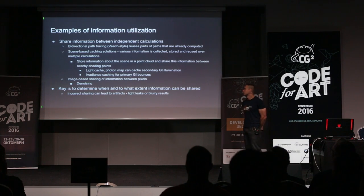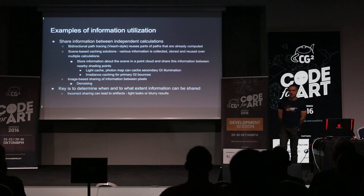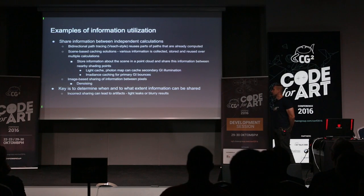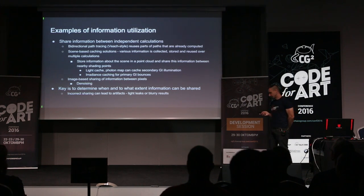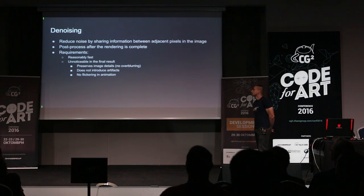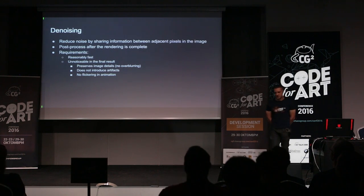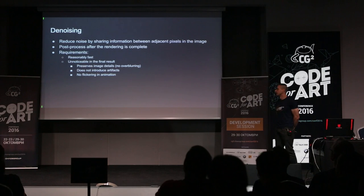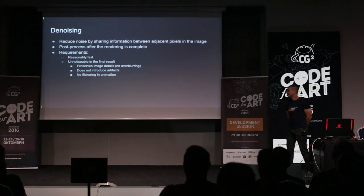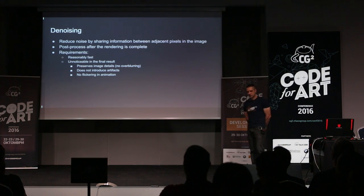The key to making a successful denoiser is to figure out to what extent we can share this information. If we do it correctly, the results will be very good. If we do it badly, we'll get artifacts like flickering, light leaks, or blurry results. The requirements from our denoiser: it has to be reasonably fast — hopefully faster than just rendering at higher quality. It should be unnoticeable in the final result, preserve all image details, and not introduce additional artifacts.